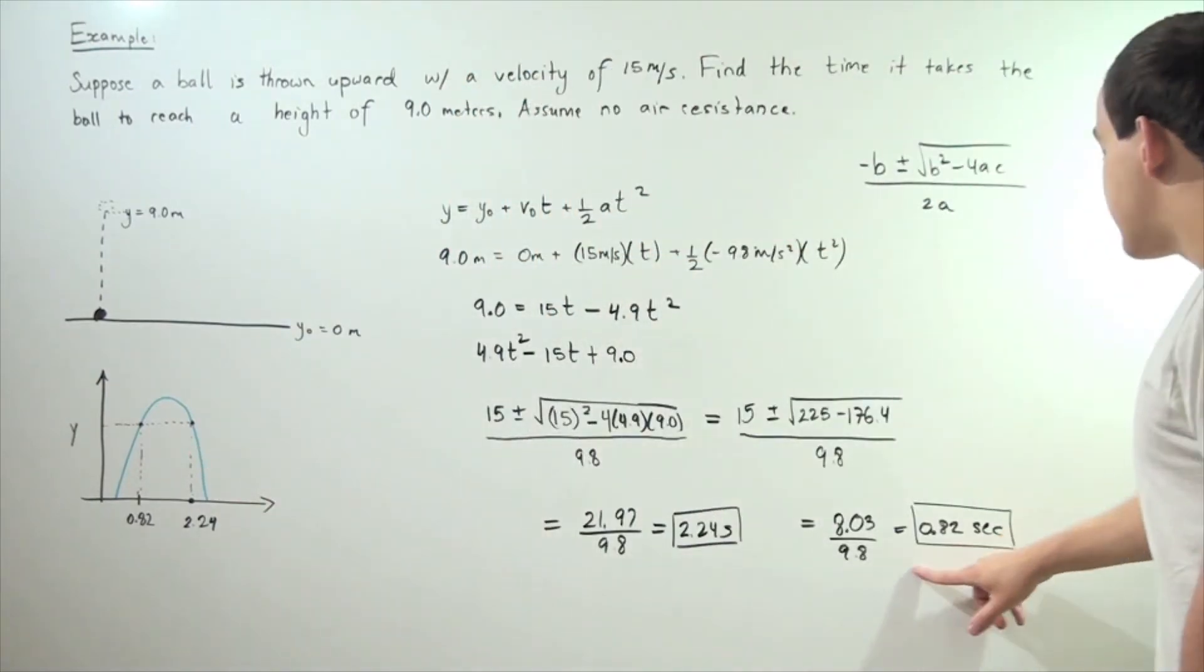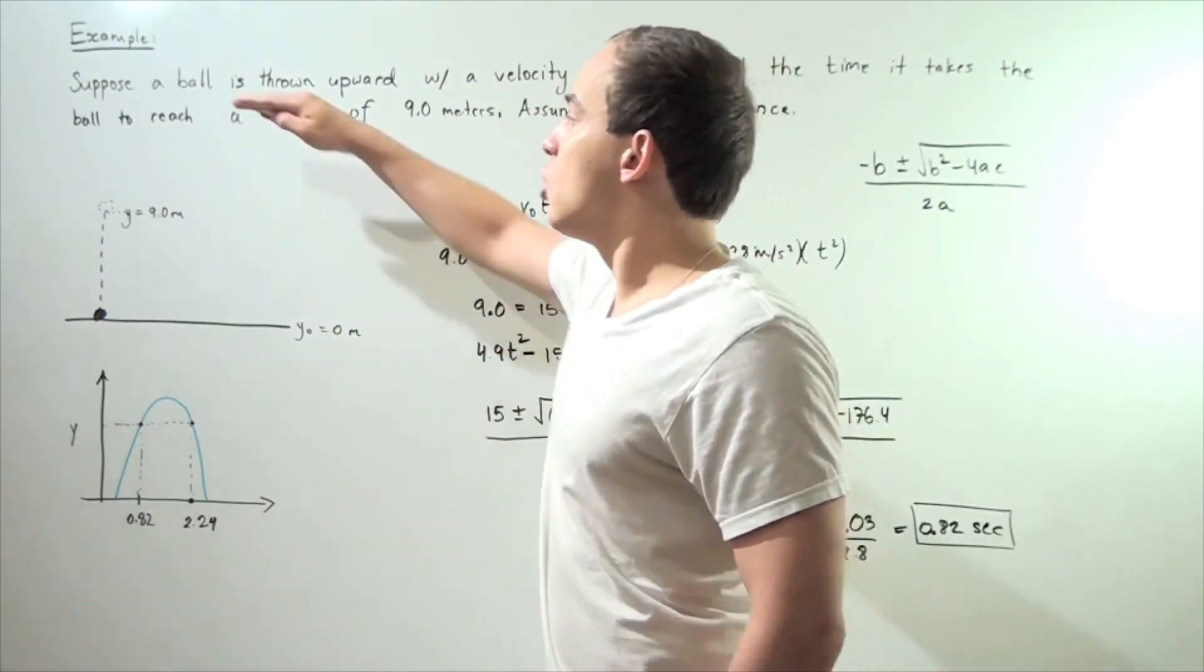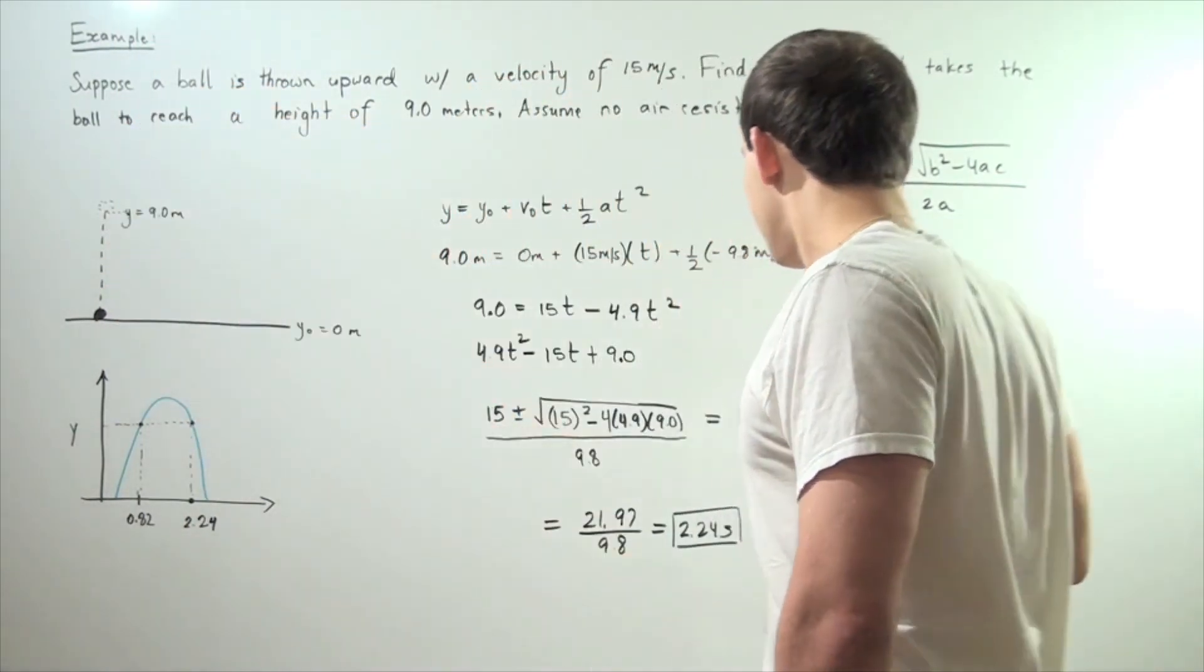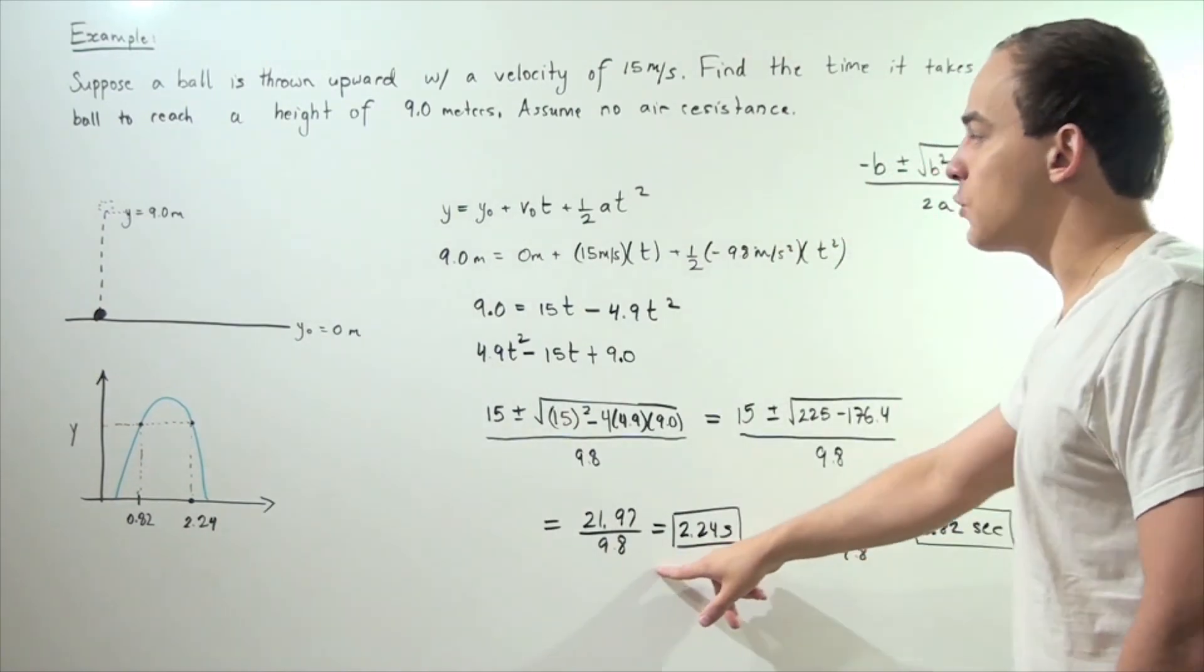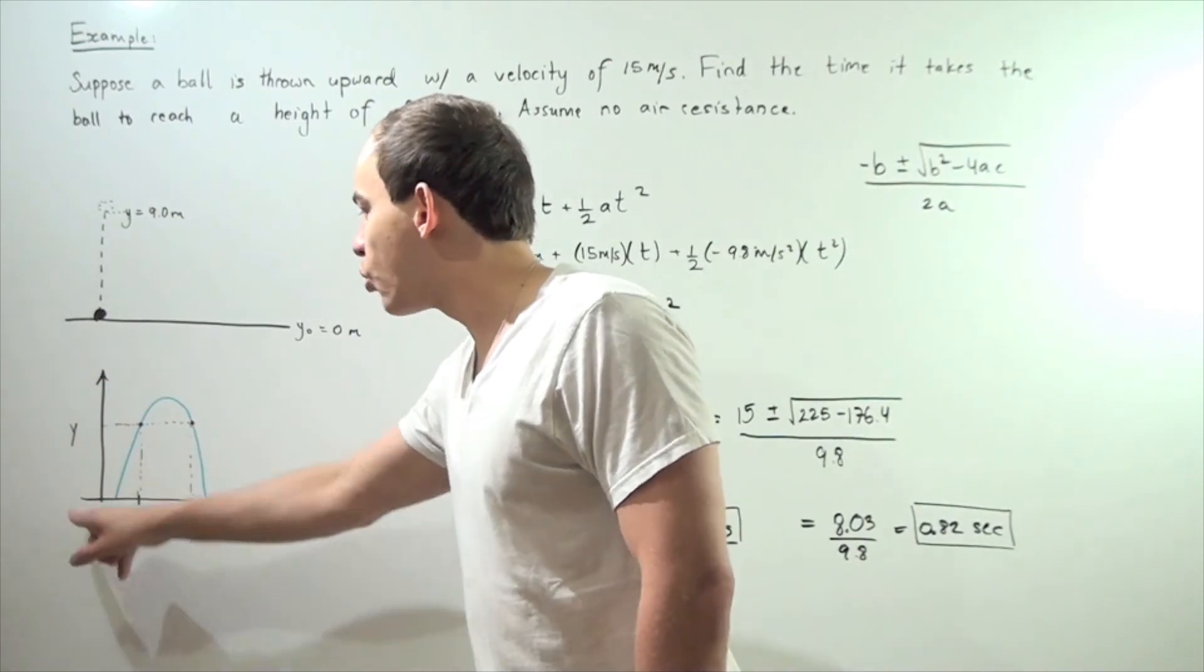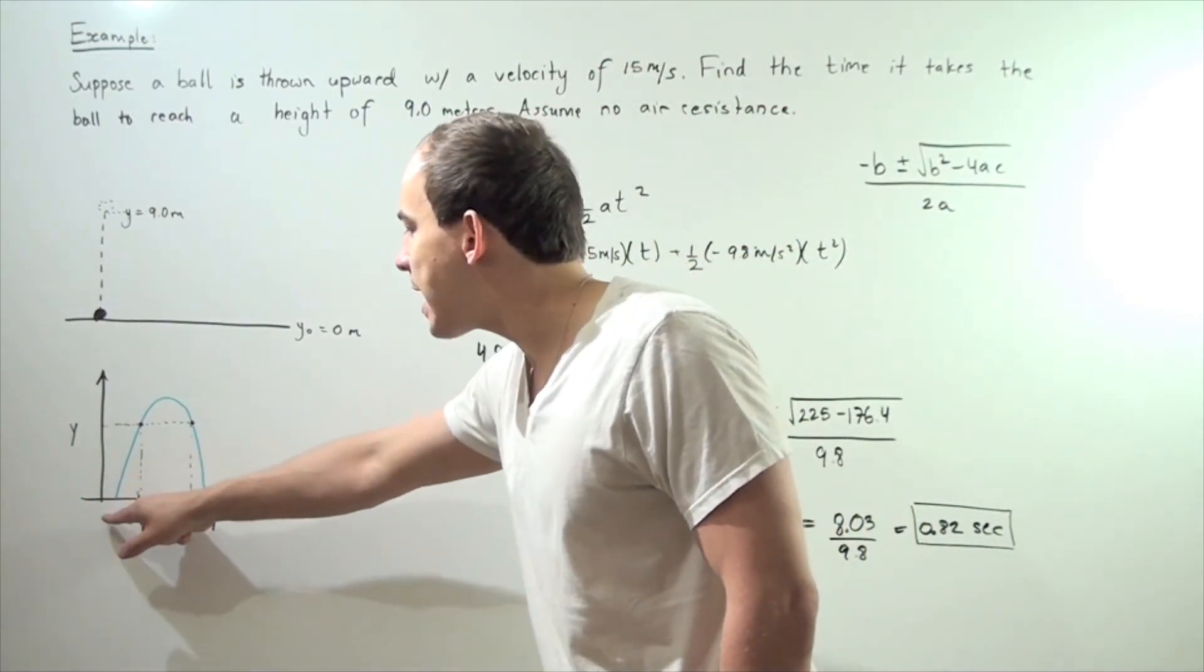This represents the first time it passes as it is going upward. Then when it reaches a maximum height and begins to travel downward, this is what the value represents. So if we plot our distance y with respect to time, we see that we have a parabolic form.